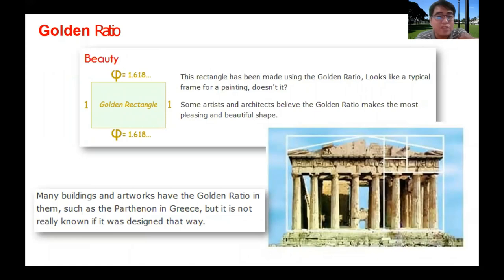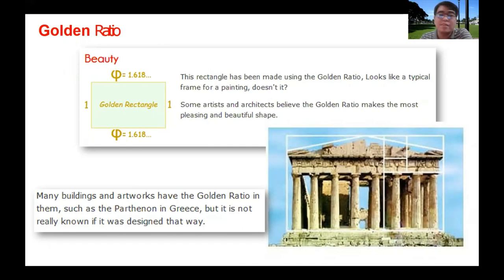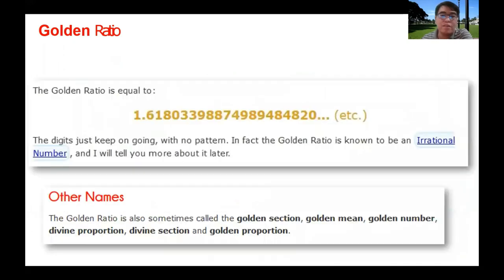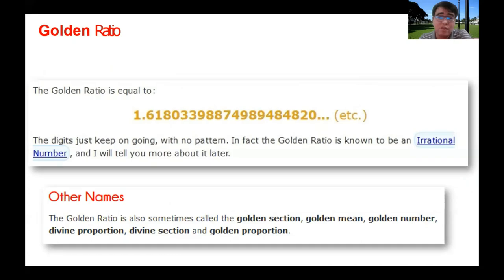The golden ratio is said to be the ratio of beauty. A rectangle made using the golden ratio looks like a typical frame for a painting, and some artists and architects believe the golden ratio makes the most pleasing and beautiful shape. Many buildings and artworks contain it, such as the Pantheon in Greece. The golden ratio is an irrational number — a never-repeating, never-ending decimal. Other names for it include the golden section, golden mean, golden number, divine proportion, divine section, and golden proportion.